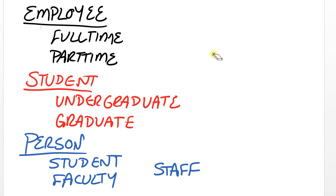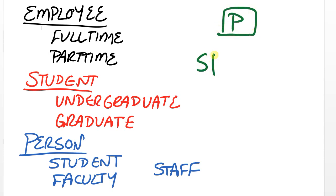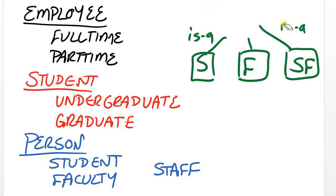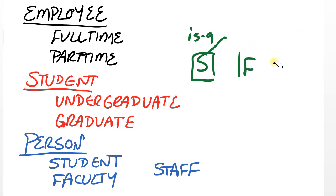Even more general is person. We could model quite a variety of people here at the University of Delaware by having person as the top of the hierarchy, and then we could have student, faculty, and even staff. A staff member is a person, a faculty member is a person, and of course a student is a person. That's the pattern you're going to see in all situations with supertype-subtype relationships.